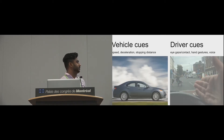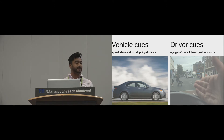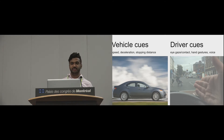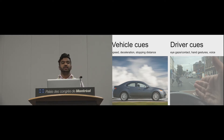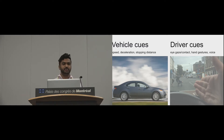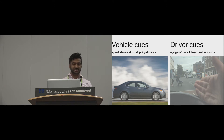I want to start off by looking at the current situation we encounter as pedestrians when making crossing decisions today. We use two different types of cues, and research has shown that both are very crucial. The first type are called vehicle cues — cues specifically coming from the vehicle itself — things like the vehicle's speed, where it stops relative to the pedestrian, and how fast or slowly it's decelerating.